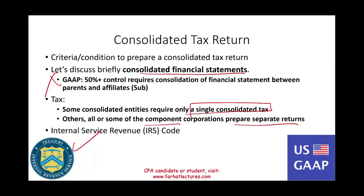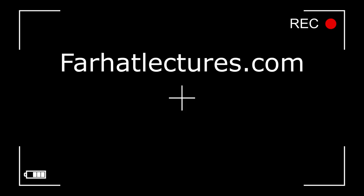So in this session we learned that under GAAP, you need 50% plus to consolidate as far as financial statements go. When you file your tax return, the rules are a little bit different.